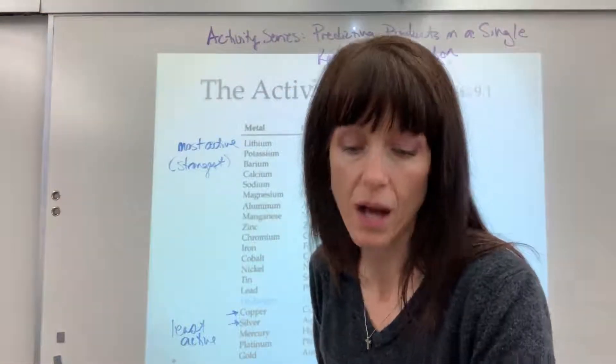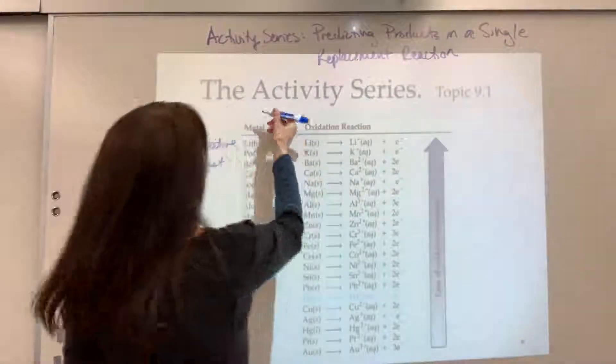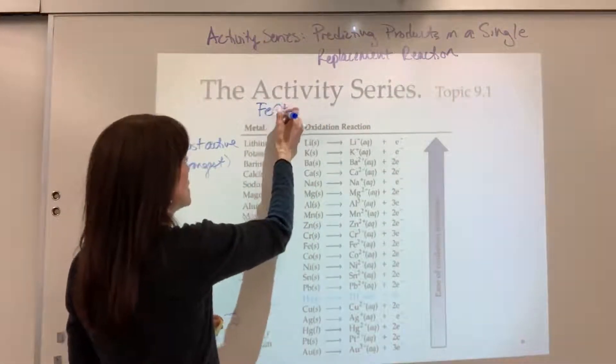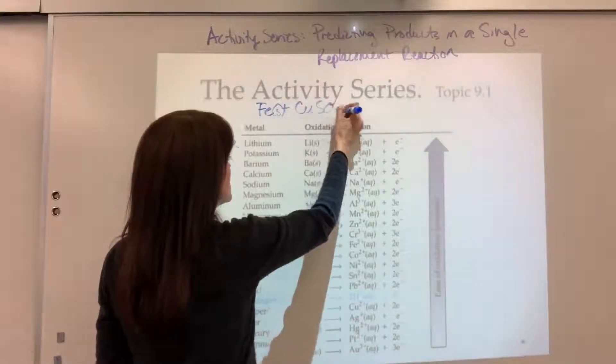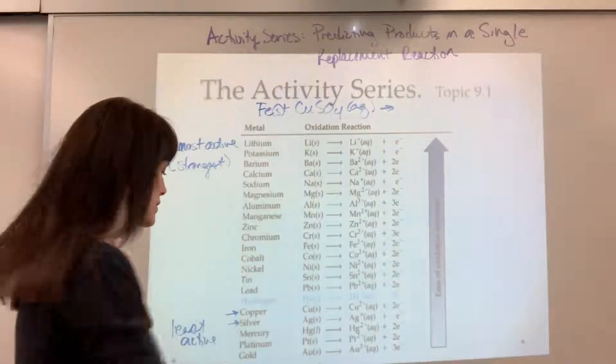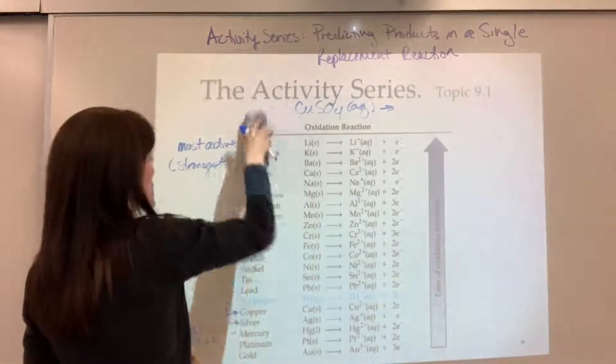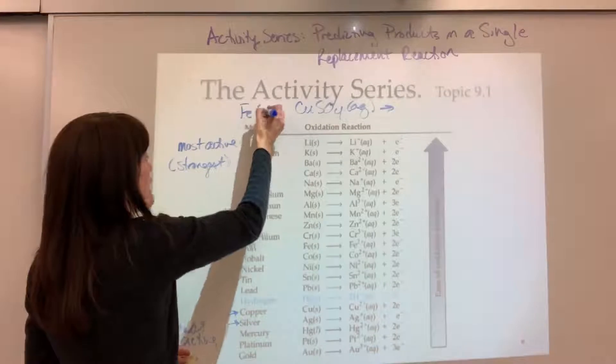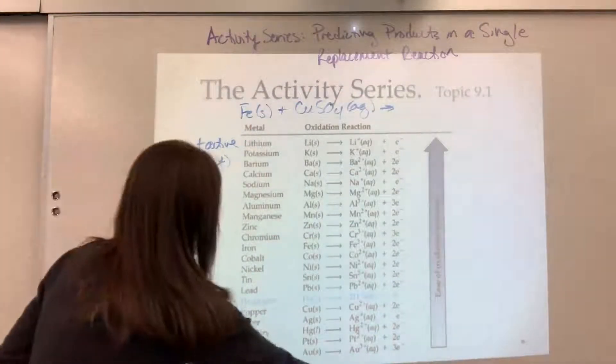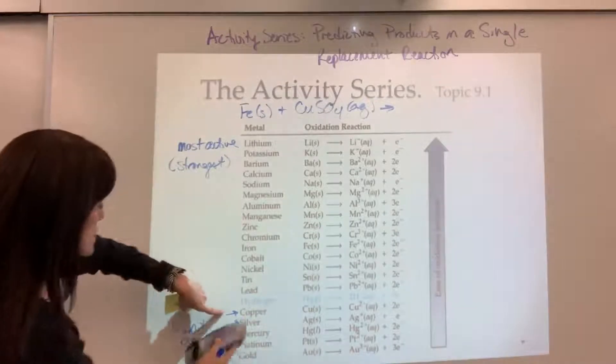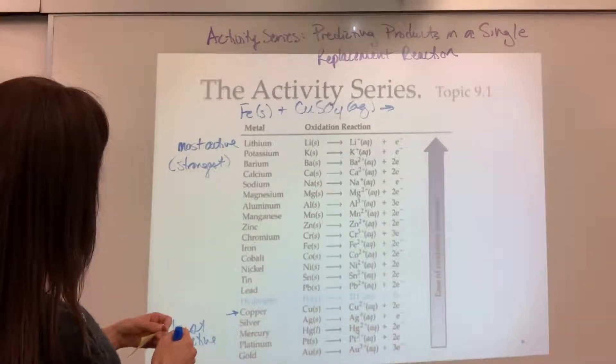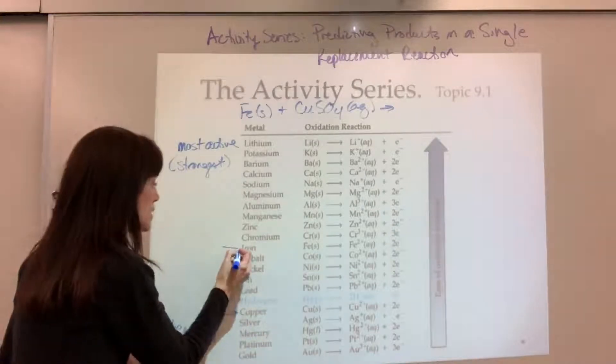Let's take two reactants. I would like to do iron plus copper sulfate. We'll have Fe solid plus CuSO4 aqueous, and I'm wondering what are the products going to be? We look at the activity series and compare which one is more active. We need copper, there's my copper down here, and the iron, there it is.